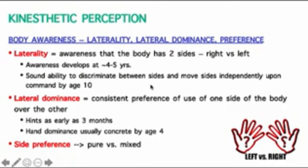We don't have a sound ability to discriminate between sides until about age 10 — which is why kindergartners through about third or fourth grade usually have problems with right versus left. Lateral dominance — like being right-handed versus left-handed — can have hints as early as three months, but hand dominance is usually pretty concrete by age four.